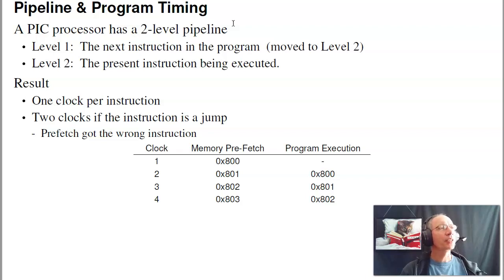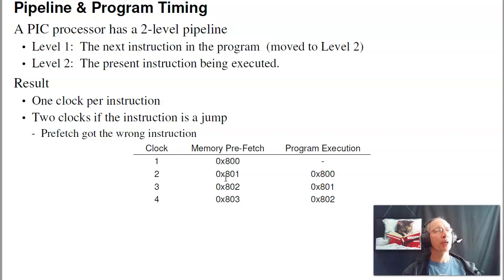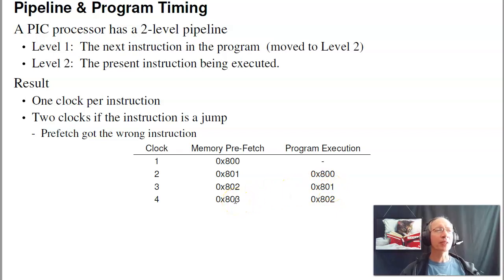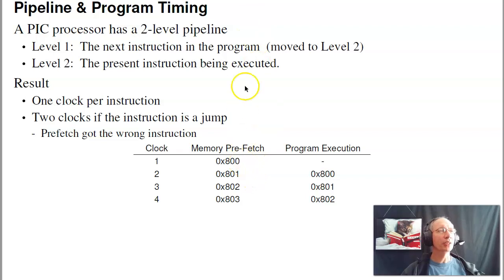There's also a thing called a pipeline. It actually takes two steps to execute each command: one clock to fetch the instruction and a second clock to execute it. But with the pipeline, on clock two I'm executing the instruction at address 800 while simultaneously prefetching address 801. At clock three, I execute 801 and prefetch 802. The net result is I'm executing one instruction every clock, unless that instruction is a goto. If 801 is a goto statement and I've prefetched 802, that's the wrong command — the next instruction is somewhere else in memory. So for the PIC, it's one clock per instruction plus one for every goto or jump statement. That makes counting clocks really easy.